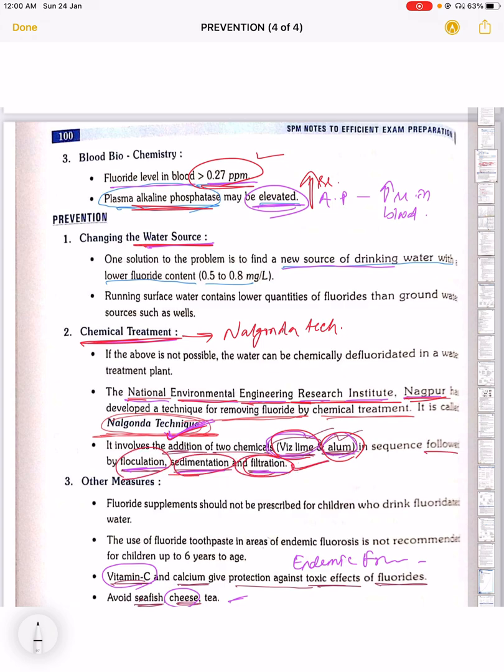Other measures include vitamin C supplements, which can protect against the toxic effects of fluorides. We should consume sea fish, cheese, and tea to prevent endemic fluorosis.